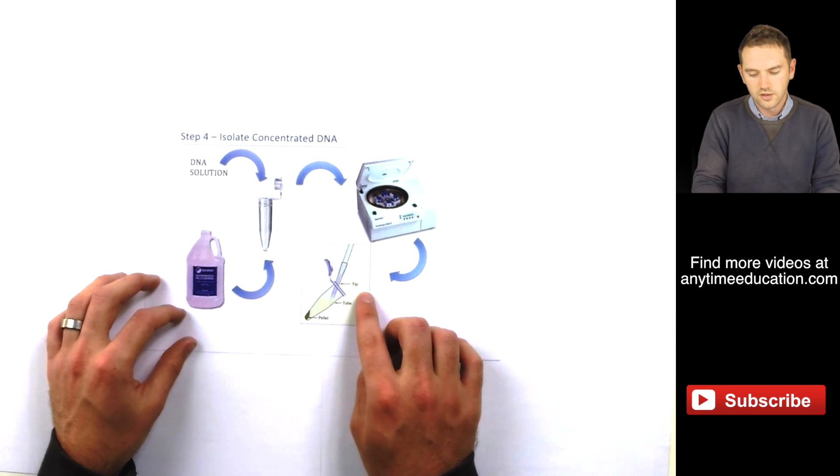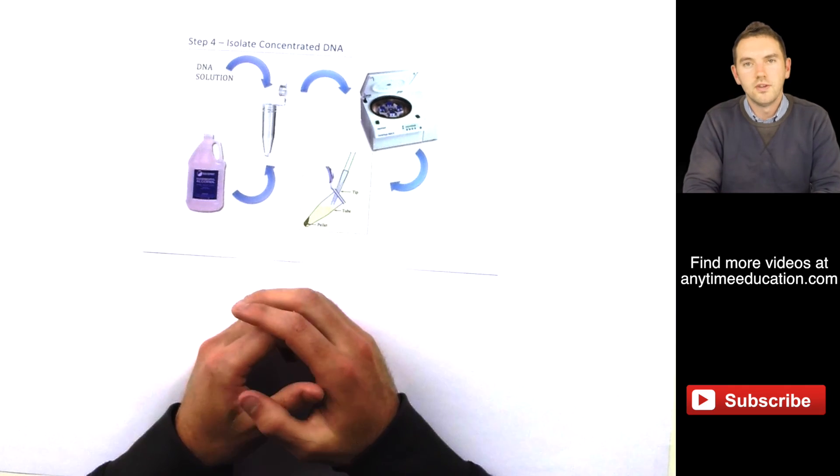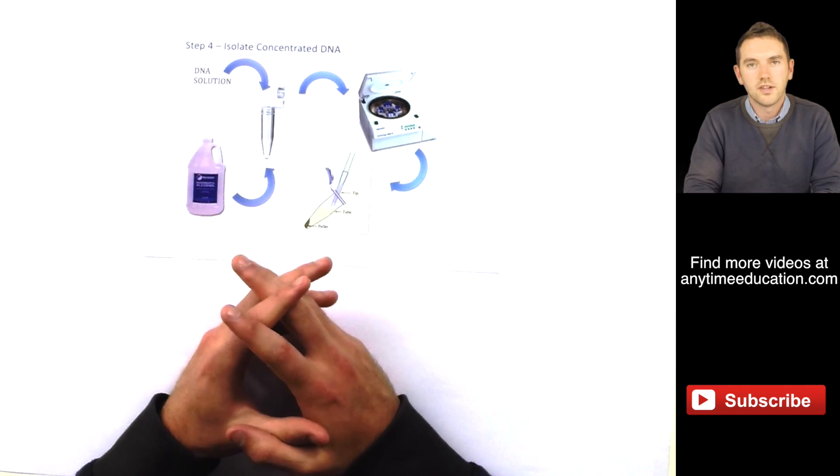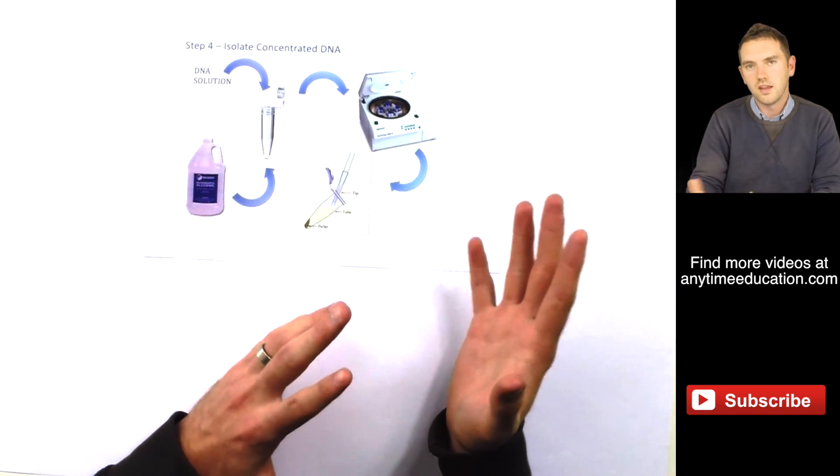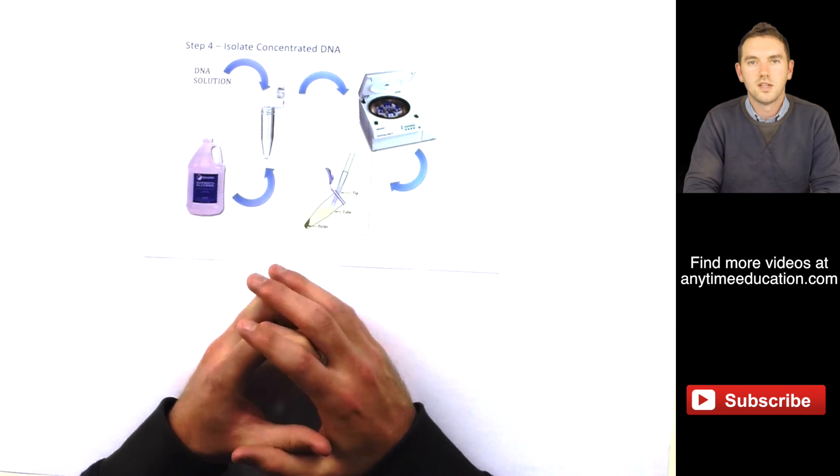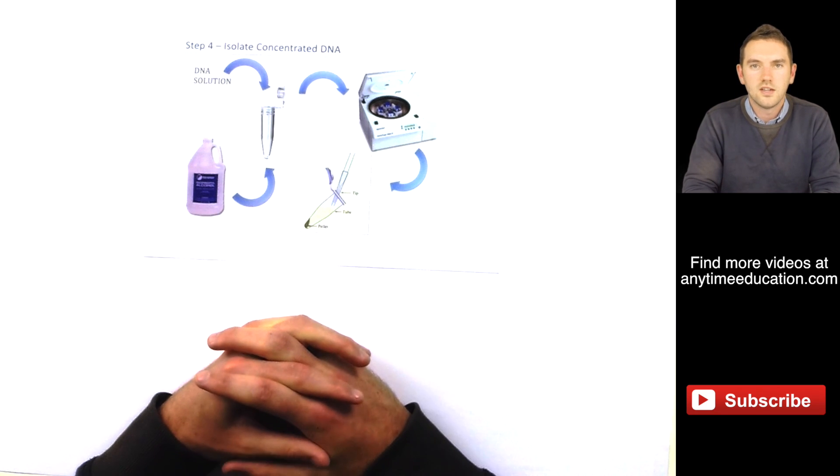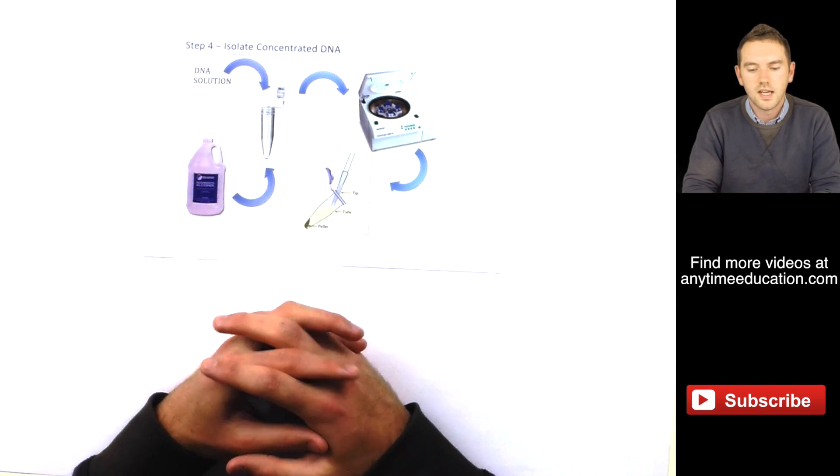To discard the solution, you then have pure, isolated, concentrated DNA. I hope you found that helpful. Really straightforward way of extracting DNA and isolating it. It's then now able to be used for other purposes. And we'll look at those in our next few videos. Thank you very much. This is Mr Dundon from AnytimeEducation.com. Please post below if you have any questions. I look forward to seeing you all again.